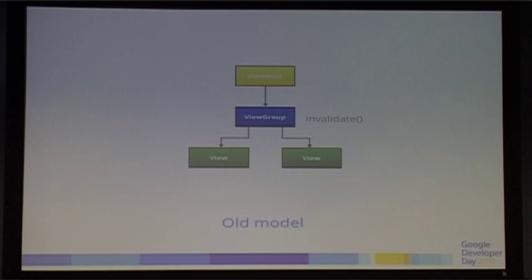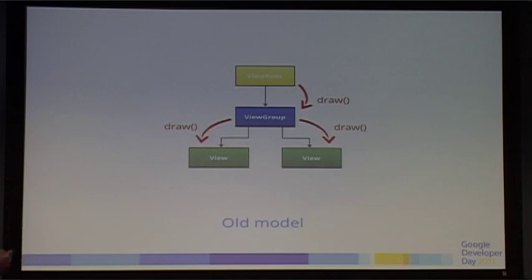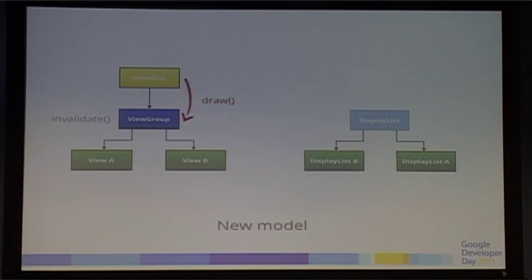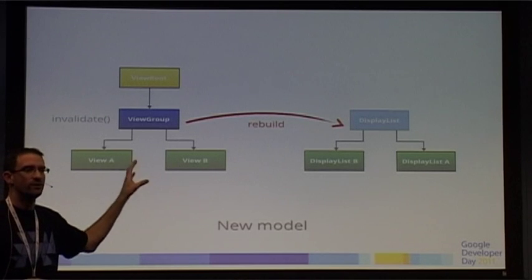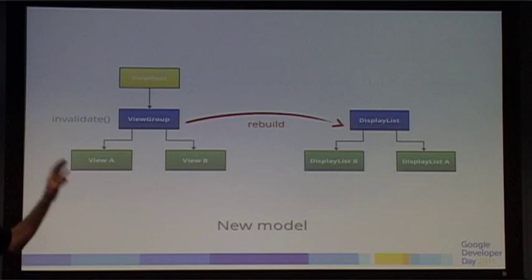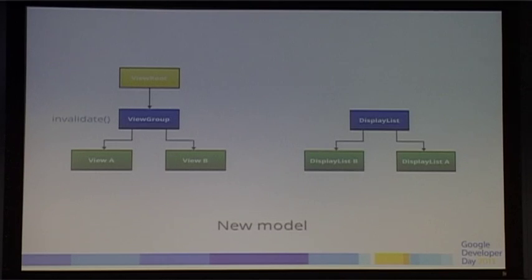Invalidating a view group previously meant both children would have to be redrawn. Now, with the display list model, you invalidate the view group, it marks the display list as dirty, invalidates itself and redraws — it just rebuilds the display list. But it already knows how to do everything because display lists A and B for view A and view B are already cached. It just needs to rebuild and relay out the top section and all the children happen automatically. This works on every single level of the view hierarchy.